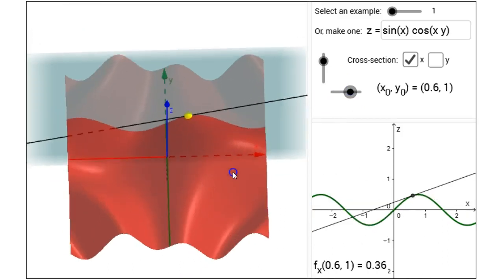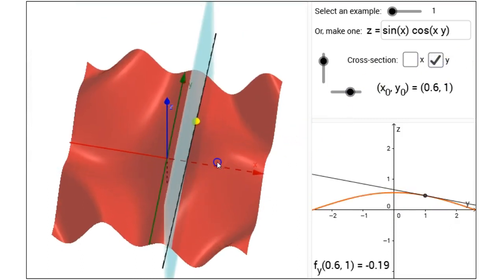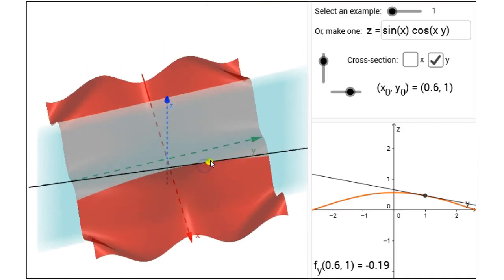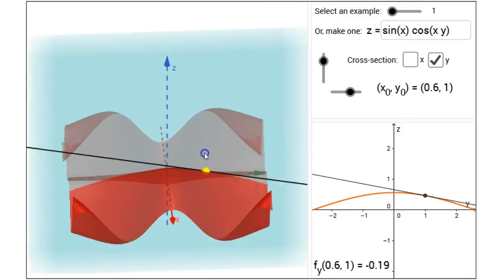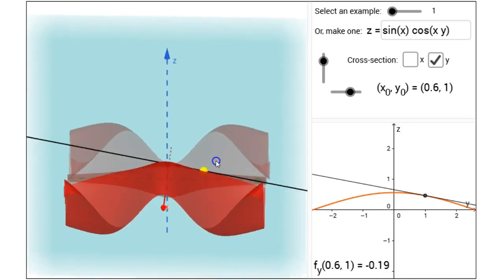What about the derivative with respect to y? Let me take a different cross-section. And now I ask myself, if I'm standing at the yellow point on the surface, and I move only in the positive y direction, what kind of a slope will I encounter?